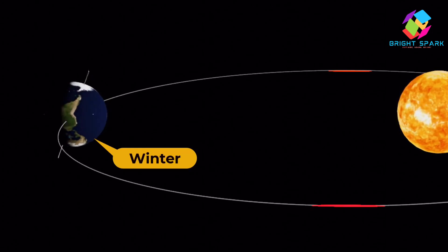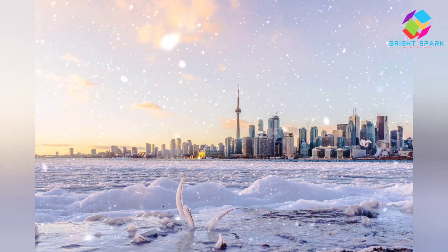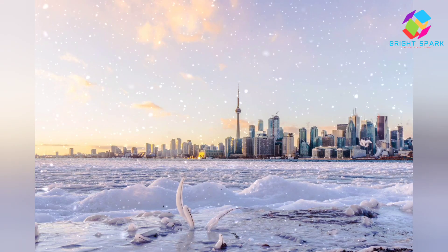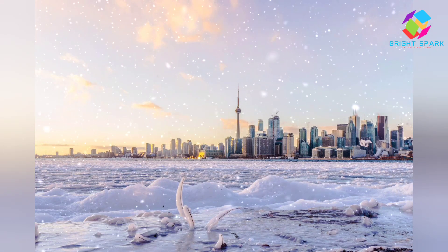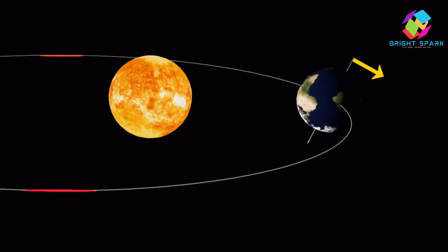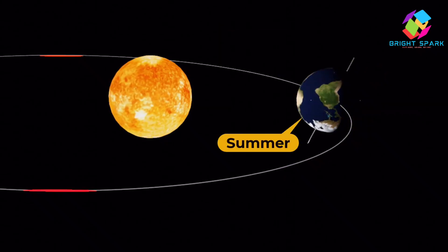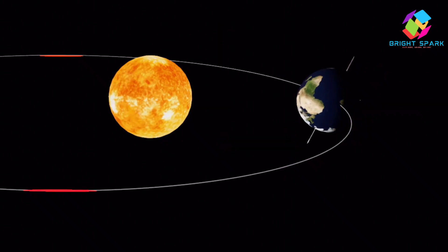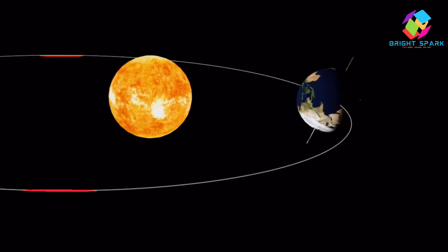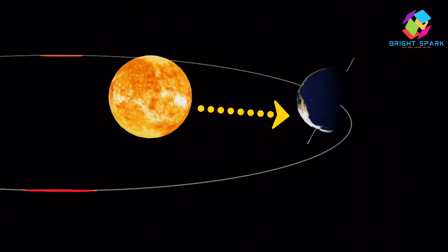Here's a fun fact: when it's winter in Canada and the USA, it's summer in Australia and Argentina. That's because while the northern hemisphere leans away from the sun, the southern hemisphere is leaning toward it. Cool, right? It's like a cosmic seesaw!